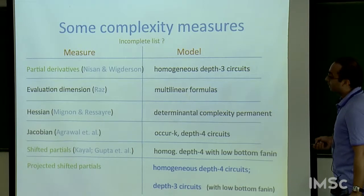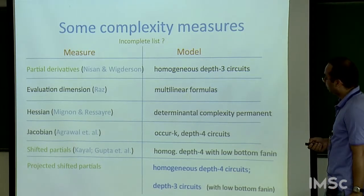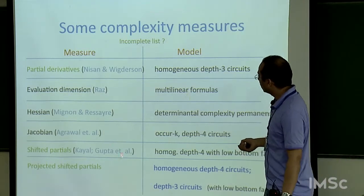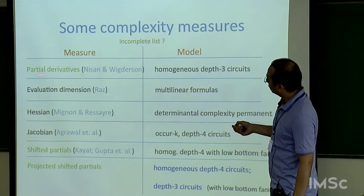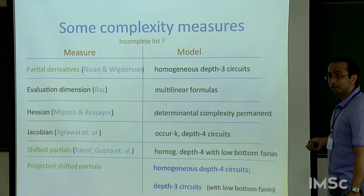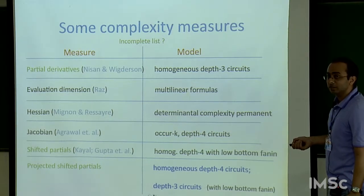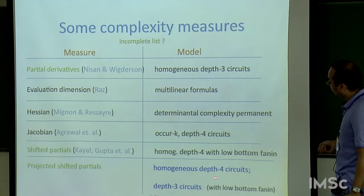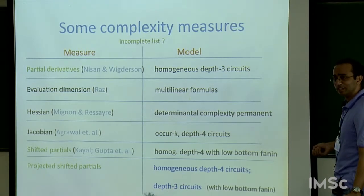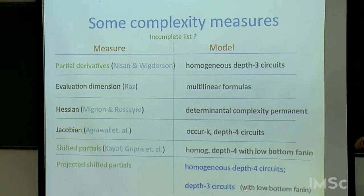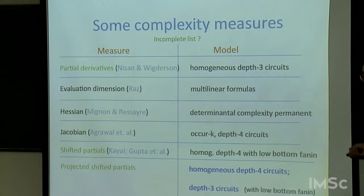The new measure Newton discussed this morning is shifted partials, defined by Neeraj and built upon by Ankit, Neeraj, Ramprasad, and Prithesh in a follow-up. This is an augmentation of the partial derivative measure, used to show lower bounds on homogeneous depth 4 with low bottom fan-in. It was extended to a further augmented measure — an augmentation of shifted partials — to show lower bounds for general homogeneous depth 4 and nearly general depth 3 (with low bottom fan-in).